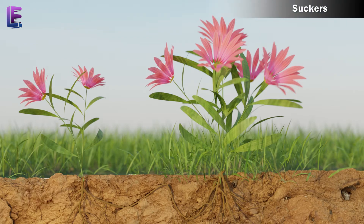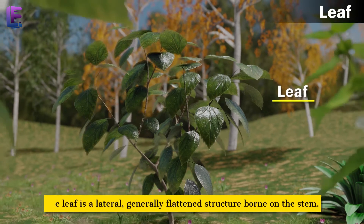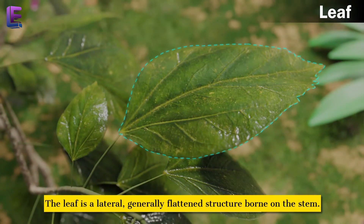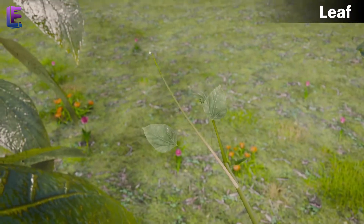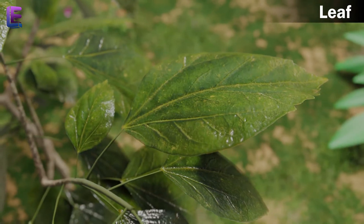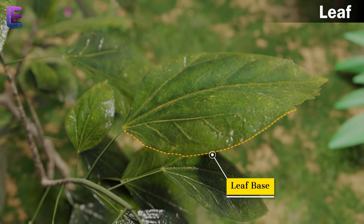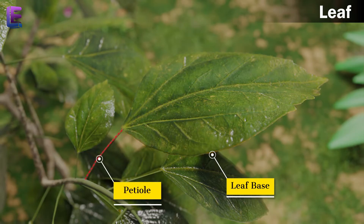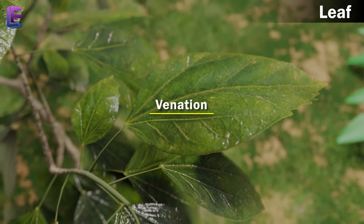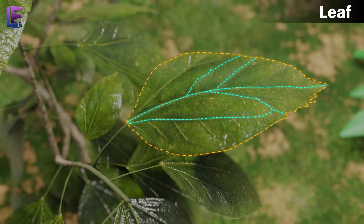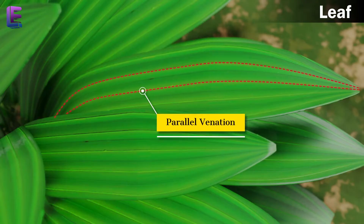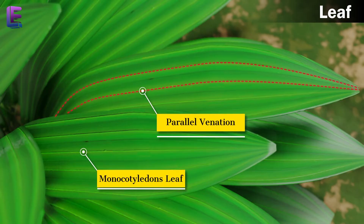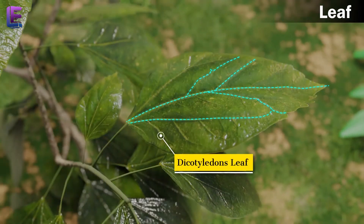Leaf. The leaf is a flattened structure that originates from the stem aerially. It develops at the node and bears an axillary bud. The axillary bud later develops into a branch. A typical leaf consists of three main parts: 1. Leaf base, 2. Petiole, and 3. Lamina. Venation is the way the veins of the lamina are arranged over the leaf. If they are in the form of a network, it is called reticulate venation. If they are parallel, it is called parallel venation. Monocotyledonous leaves have parallel venation, while dicotyledonous leaves have reticulate venation.